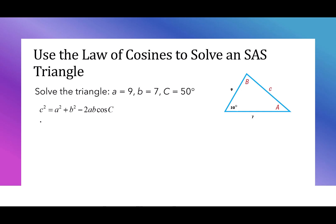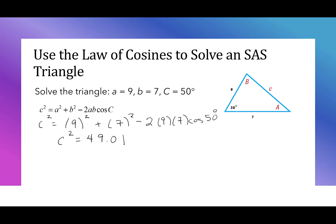Let's plug in what we know. We don't know c squared. We know a is equal to 9 and we'll square it. b is equal to 7 and we'll square it. We're going to subtract 2 times 9 times 7 times the cosine of 50 degrees. We can put all of this in our calculator — make sure you double-check your mode to make sure it's in degrees. When I put in 9 squared plus 7 squared minus 2 times 9 times 7 cosine of 50, I got that c squared is 49.01.